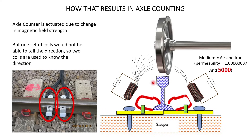In real axle counters, it's not just one coil — we have two coils, because we also want to know the direction in which the wheel is going. We'll look at that in the next slide.